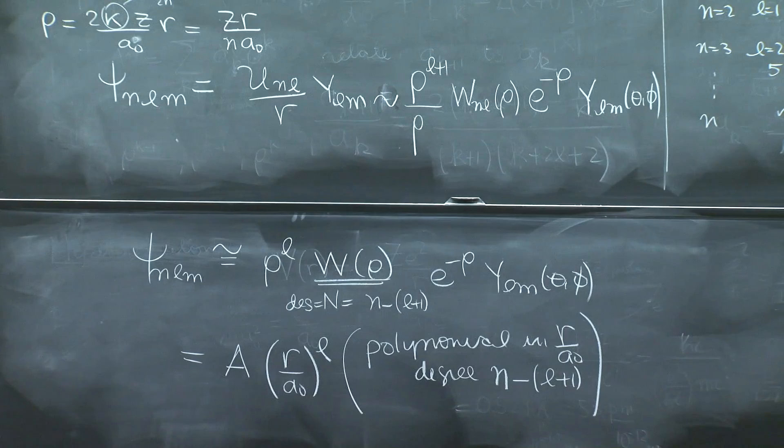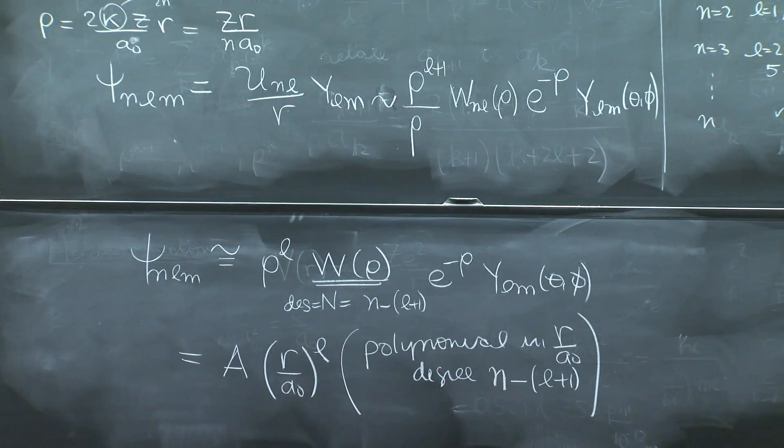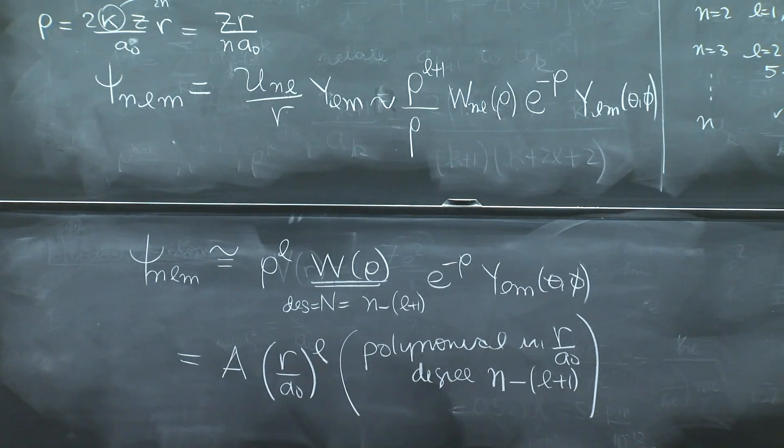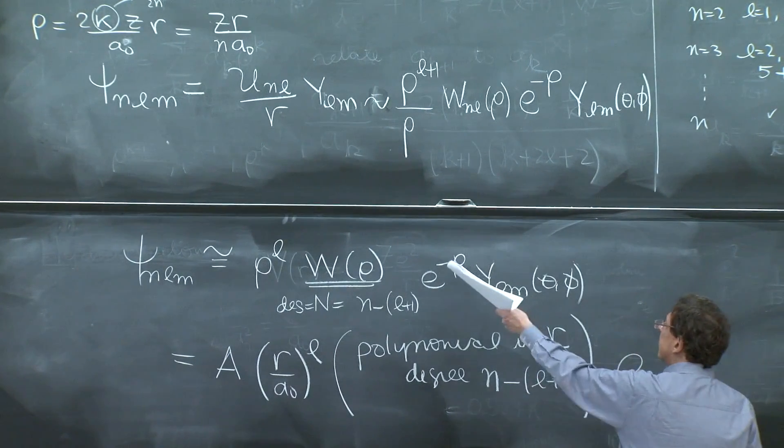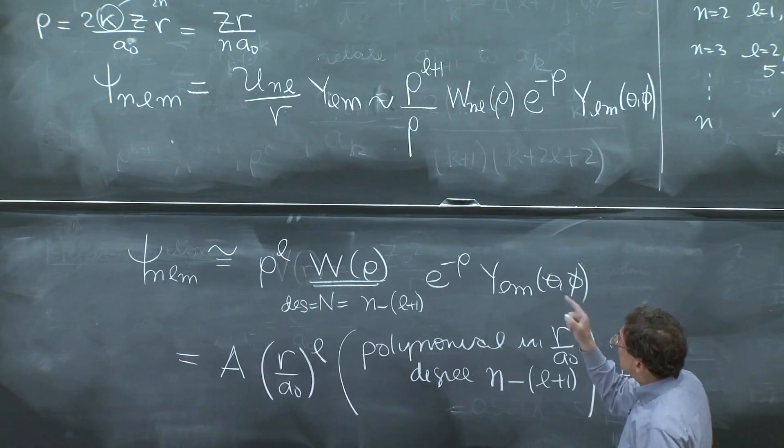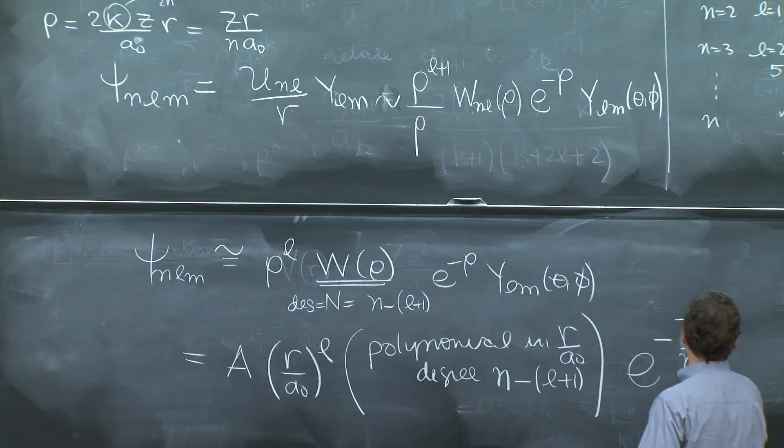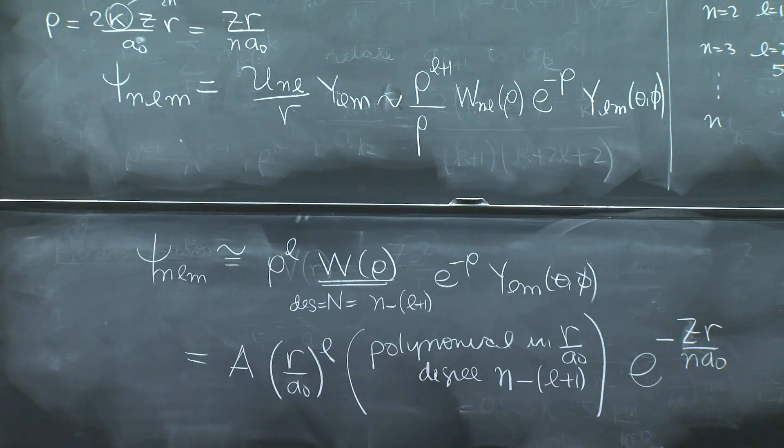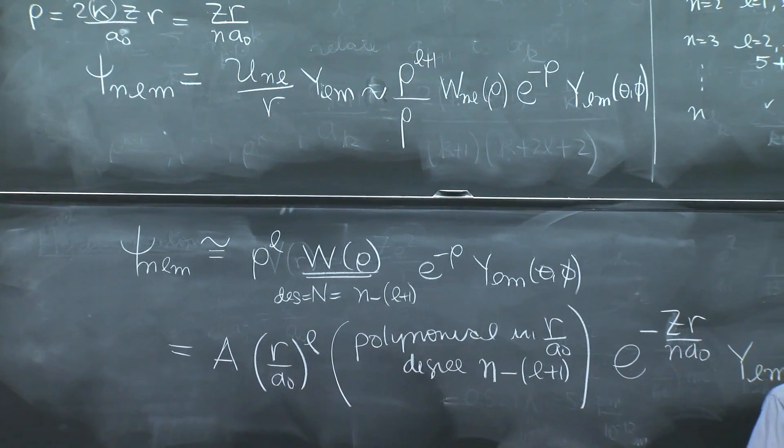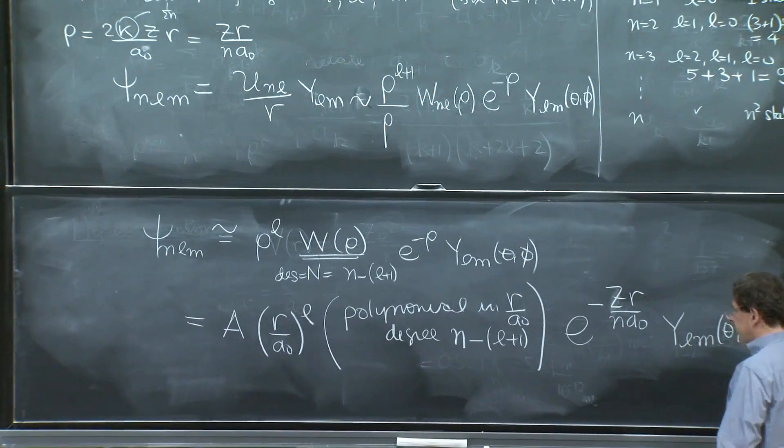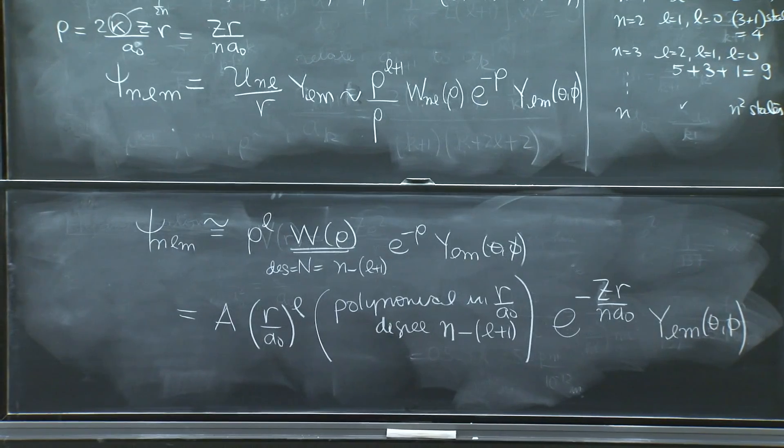These are Laguerre polynomials. We will not look into them in this course. You may do it in a more advanced course. It's interesting, but it's better to just get an intuition as to what's happening here. There is an e to the minus rho, which is interesting to have fully. So this is e to the minus z r over n a0. And there is a ylm of theta and phi. So this is your whole solution for the hydrogen atom.